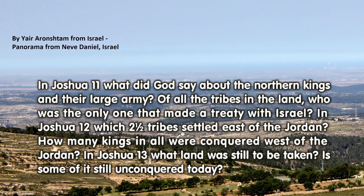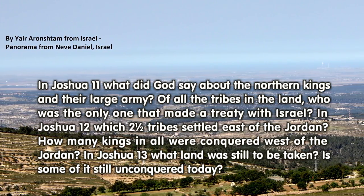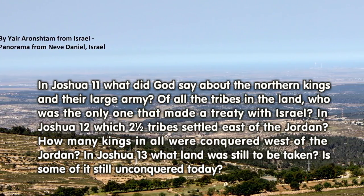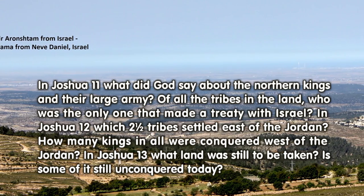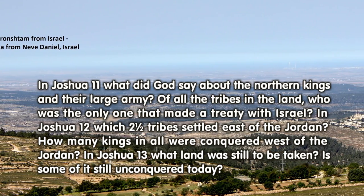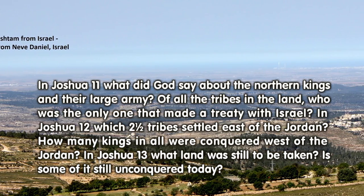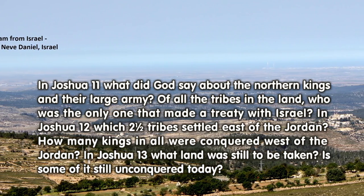In Joshua 12: Which two and a half tribes settled east of the Jordan? How many kings in all were conquered west of the Jordan?